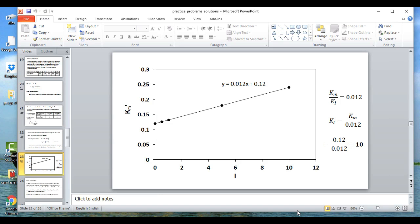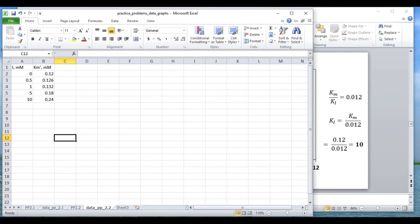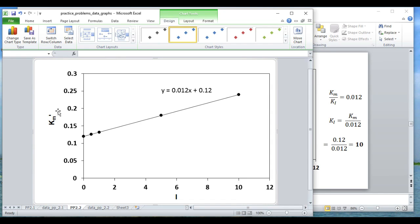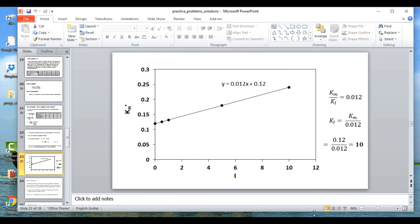Let me show you the working as a spreadsheet. I have I here and Km dash from the table given here. This is for plotting. When I plotted this, I got Km dash versus I as this. The equation was y equals 0.012x plus 0.12. Y in this case is Km dash, x is I. So Km dash is 0.012 I plus 0.12. That is what is shown here.